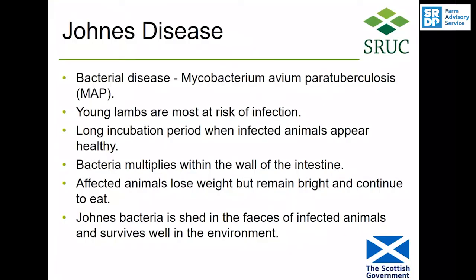Johne's disease is a bacterial infection caused by Mycobacterium avium paratuberculosis, and it also occurs in cattle. Young lambs are most at risk of infection but it has a really long incubation period, so during that time infected animals will appear healthy. Eventually the bacteria multiplies within the wall of their intestine and these animals lose weight but they remain bright and they continue to eat. They infect other animals because the Johne's disease bacteria is shed in their faeces and it survives really well in the environment.